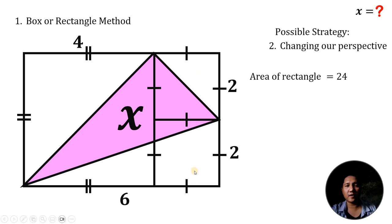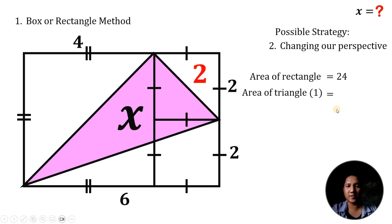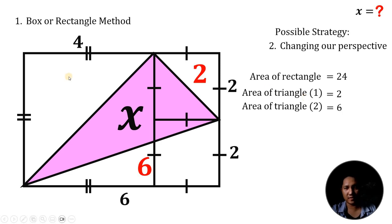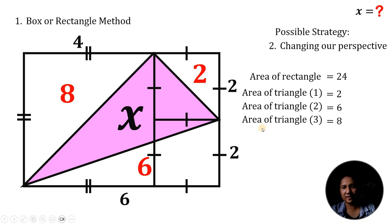Now we find the areas of the 3 right triangles and subtract from the rectangle's area. The first right triangle has side lengths of 2 and 2, so its area equals ½ × 2 × 2 = 2 square units. The second right triangle on the bottom has area = ½ × 2 × 6 = 6 square units. The third triangle has area = ½ × 4 × 4 = 8 square units.